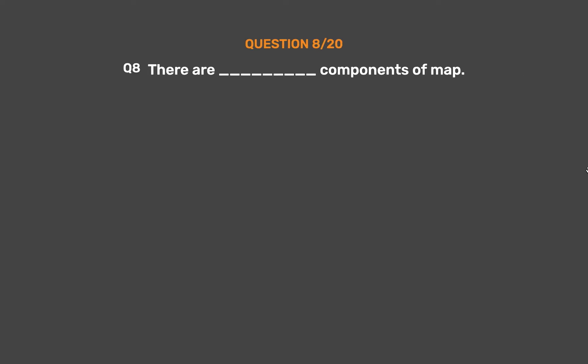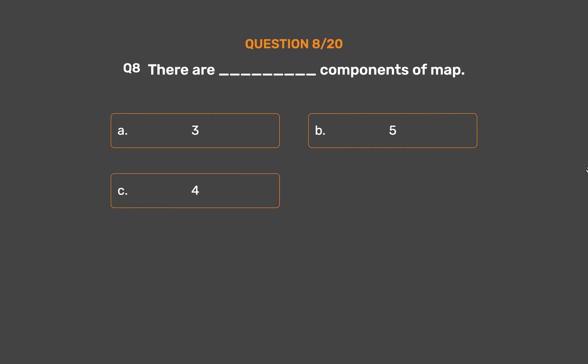Question number 8. There are __ components of a map. Option A: 3. Option B: 5. Option C: 4. Option D: 2.